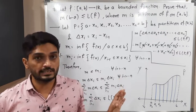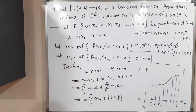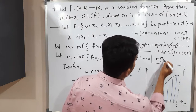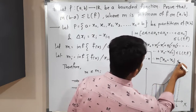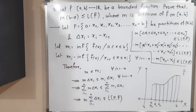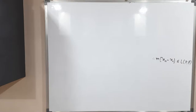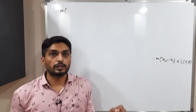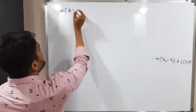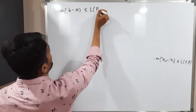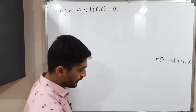After cancellation, only the first and last terms remain, giving us m · (xₙ − x₀) ≤ L(P, f). Since xₙ = b and x₀ = a, we obtain m(b − a) ≤ L(P, f). This is our first key inequality.